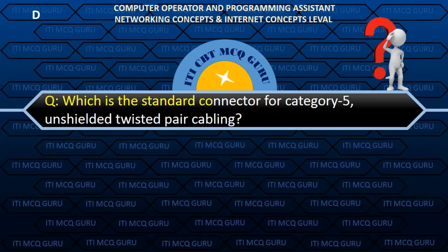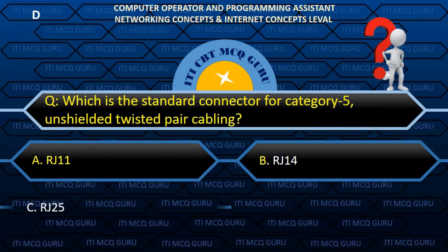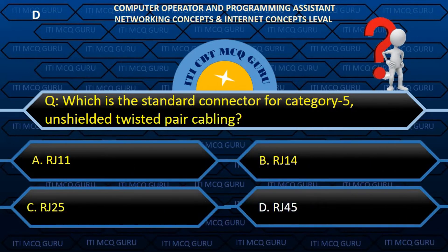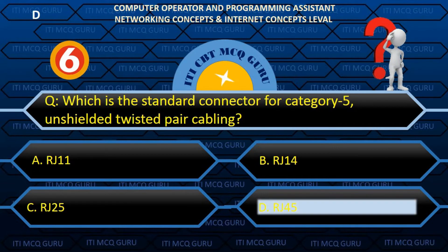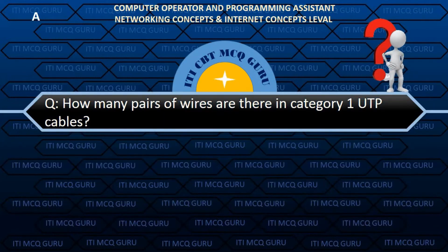What is the standard connector for Category 5 Unshielded Twisted Pair cabling? D. RJ45.